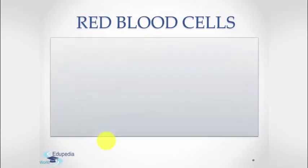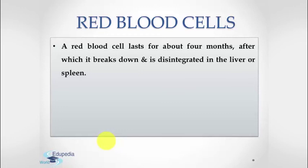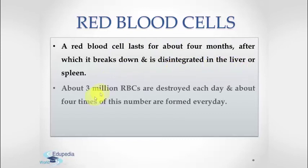This was all about hemoglobin, which is a very important part of the red blood cells. A red blood cell lasts for about four months, after which it breaks down and is disintegrated in the liver or spleen. About three million RBCs are destroyed each day and about four times this number are formed every day.